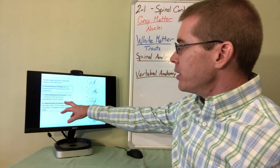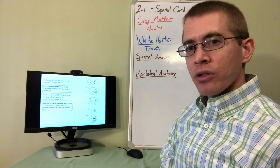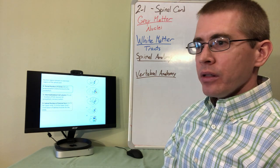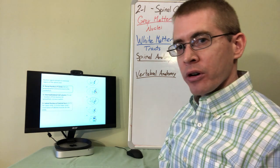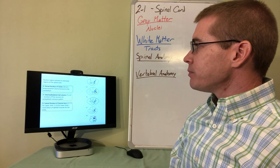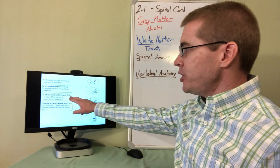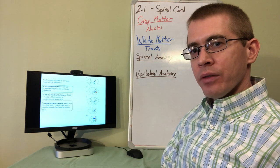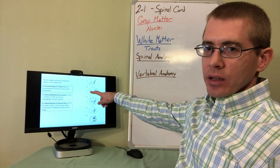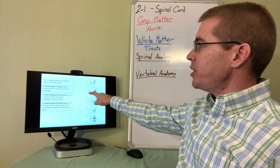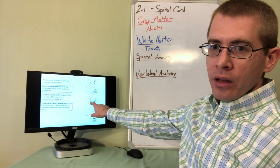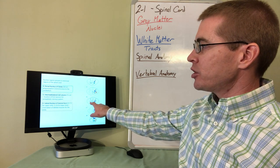The intermediolateral cell column, also called the IML, is the location of the sympathetic motor neurons or visceromotor neurons. These IML neurons are located in the thoracic region because that is the source of sympathetic neurons in the spinal cord. We don't see IML neurons in C7, lumbar, or sacral sections — only in the thoracic portion, visible just on the edge labeled number five.